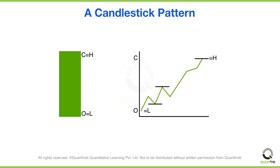Now can you tell me what this candle signifies? Clearly, it signifies extreme bullishness in the market as the price kept on rising. Whenever resistance was faced and sellers tried to take over, buyers came back with even more strength. As a result, the day started from open and closed at the high without actually creating any type of wicks.